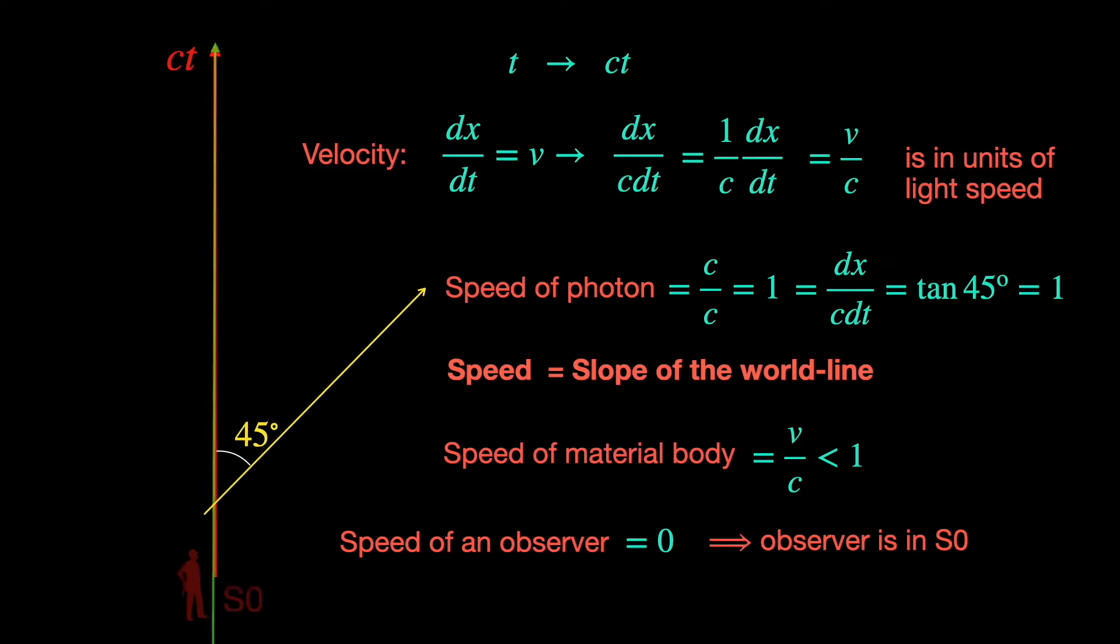This means the vertical time axis of S0 is actually the world line of one of us observers belonging to S0.